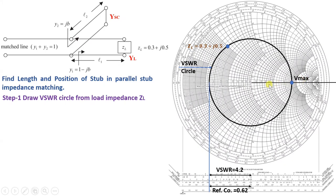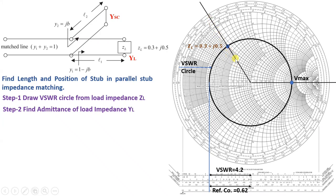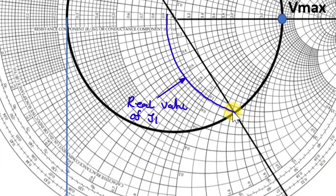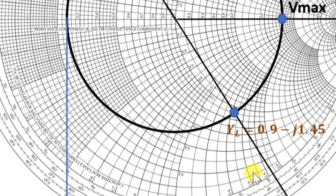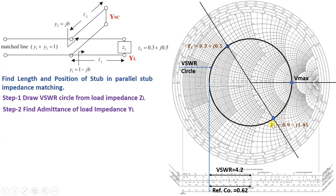Now let us calculate YL. YL is exactly the diametrically opposite point of ZL on the Smith chart. Stretching a line from the center through ZL and extending to the opposite side gives YL. The real value of YL is approximately 0.9 and the imaginary value is in the negative imaginary circle, giving YL = 0.9 - j1.45.